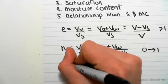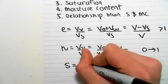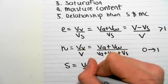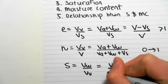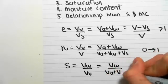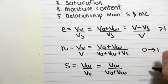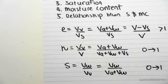The saturation is given by capital S, which equals the volume of the water on the volume of the voids, which we can further break down as volume of water on volumes of air plus the volume of water. This value likewise ranges from 0 to 1.